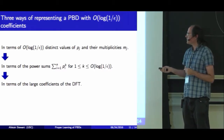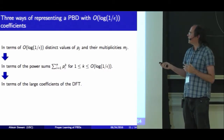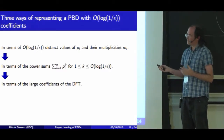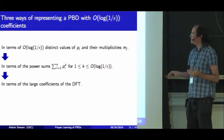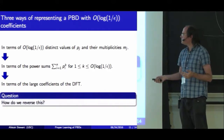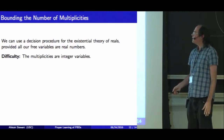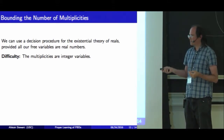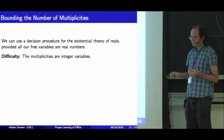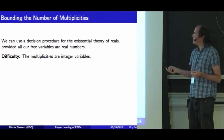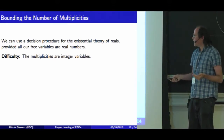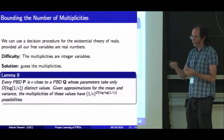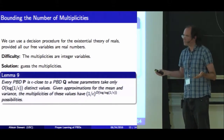We can get the DFT coefficients as a polynomial in these parameters, and these are things we know how to learn. This is a proper representation as a Poisson binomial distribution, so to do the proper learning we need to reverse this. There are algorithms for the decision procedure for the existential theory of reals, given by Canny and Renegar, which can solve systems like this as long as all free variables are real numbers. The problem is that the multiplicities are integers. We can get around that by guessing them, as long as we can guess from a small set — but done naively we end up with 1/ε^(log 1/ε) possible multiplicities, which is the bound we're trying to beat.